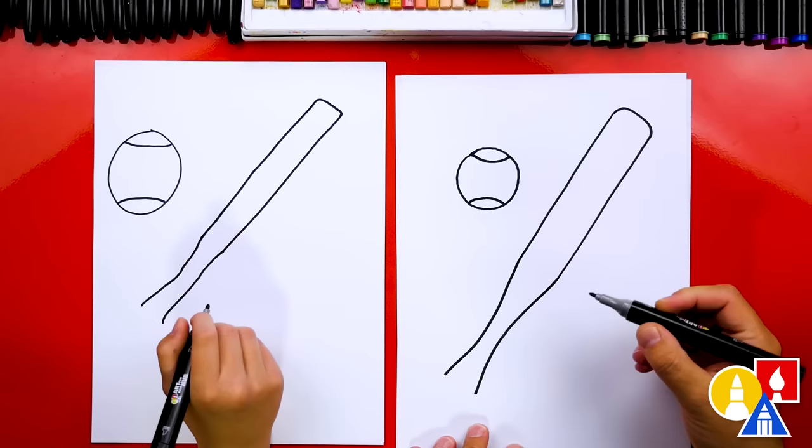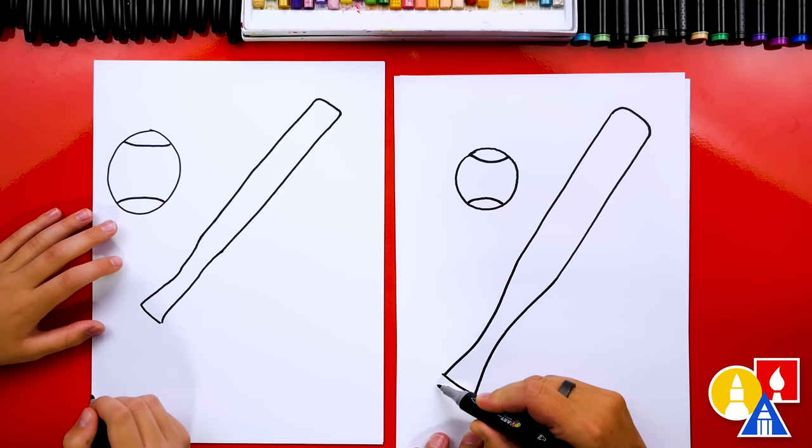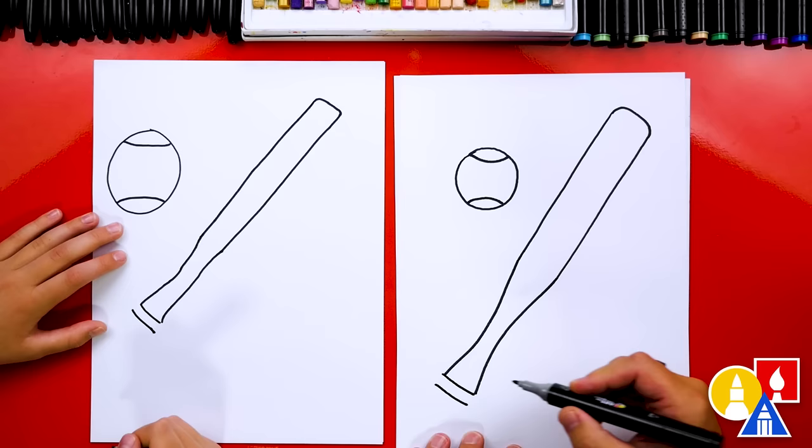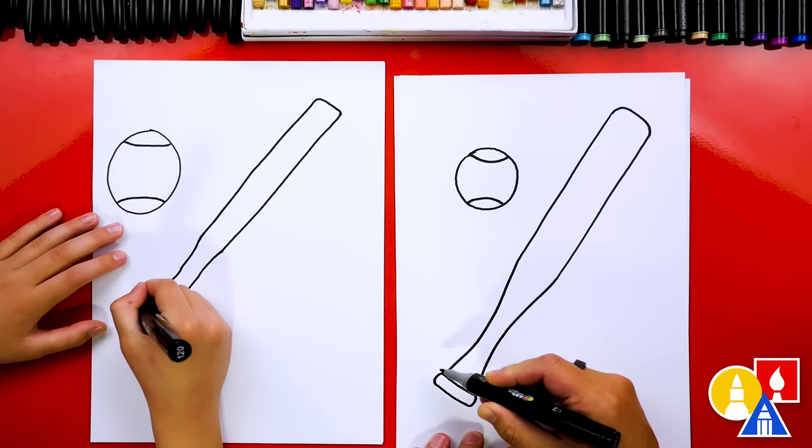Now let's draw the very bottom of the handle. We're going to draw a line that comes across like this. And then we're going to draw another line right next to it. That's parallel going this way. Then we're going to connect the left side and the right side or the top and the bottom. Cool.